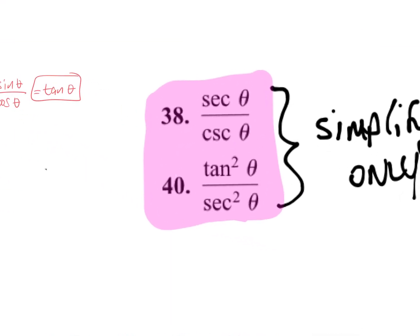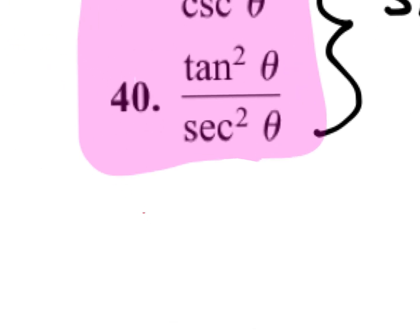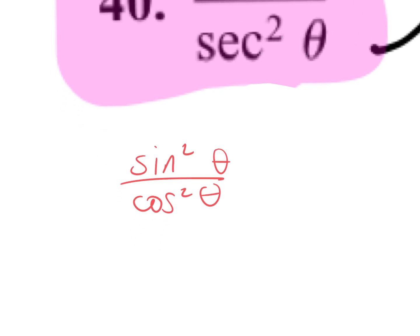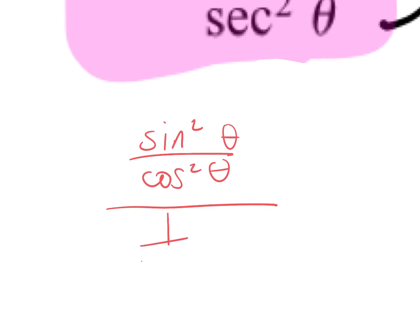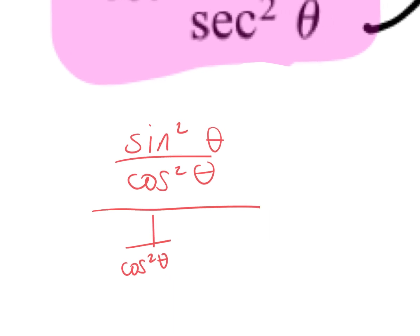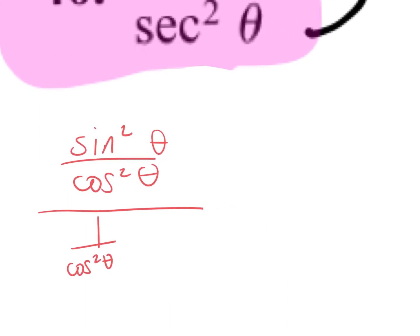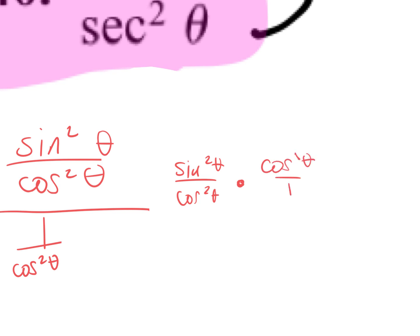Problem 40: tangent squared divided by secant squared. Anything squared attached to plus or minus 1? No — just go to sines and cosines. Tangent squared is sine squared over cosine squared, divided by 1 over cosine squared. Keep, change, flip: sine squared over cosine squared times cosine squared over 1. The cosine squareds cancel — answer is sine squared.